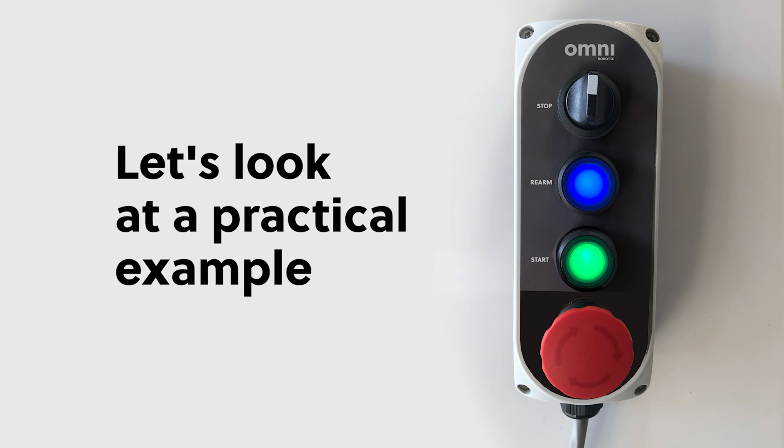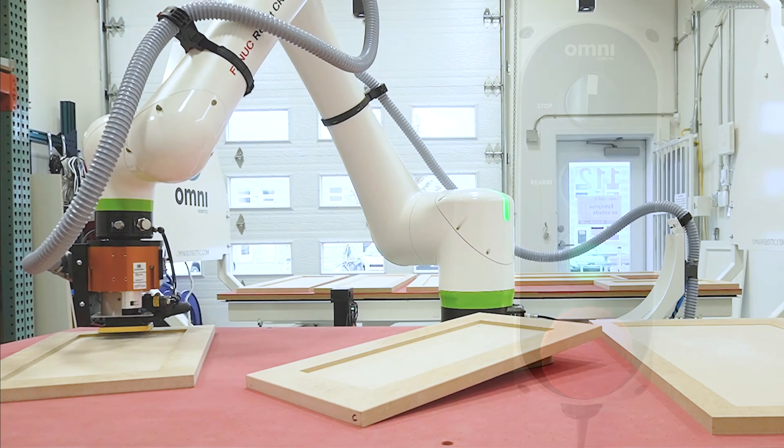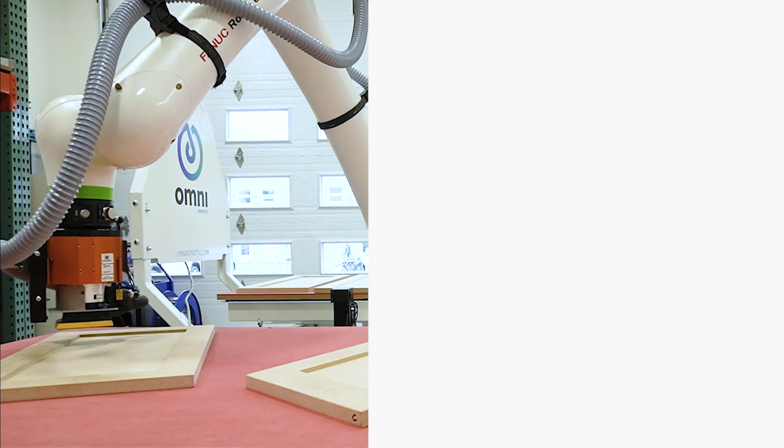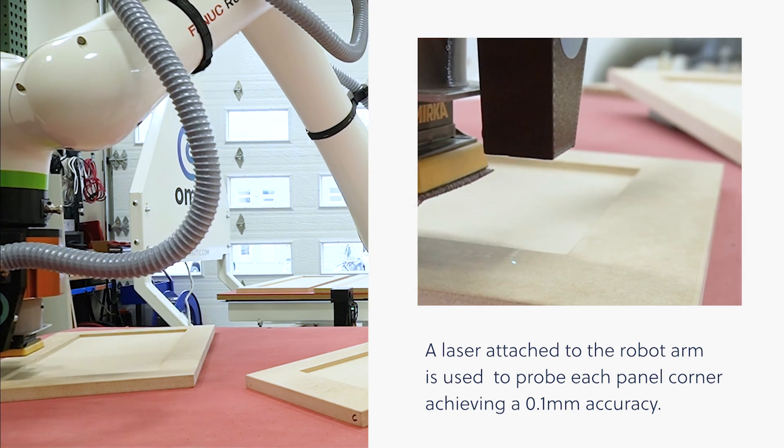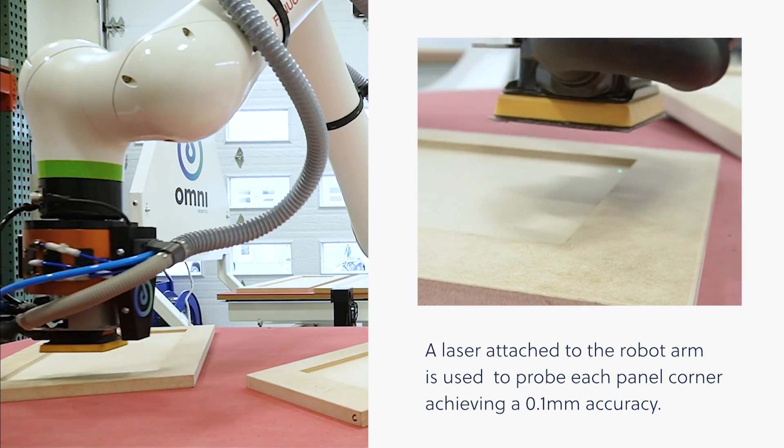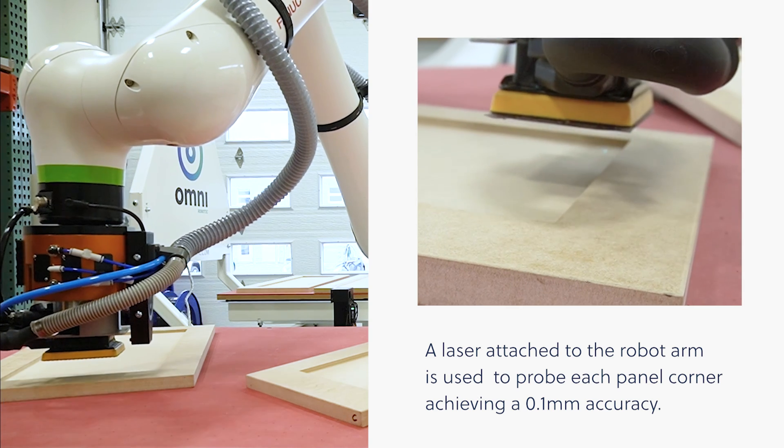Let's look at a practical example. A laser, attached to the robot arm, is used to probe each panel corner, achieving 0.1 millimeter accuracy.